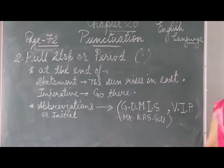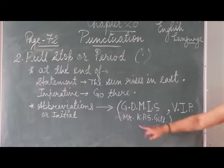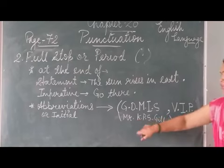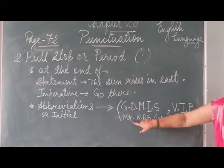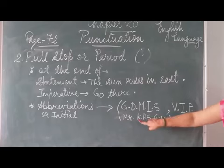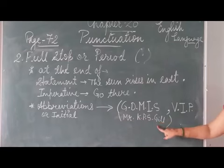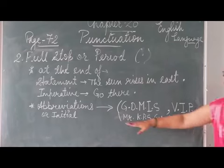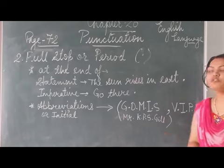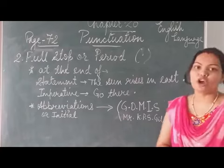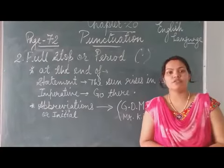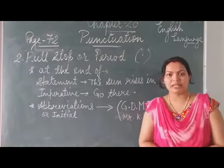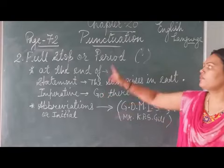In initials also, we use dots — for example, Mr. K.P.S. GIM. You can see after Mr. there is a dot, then K dot, P dot, S dot, GIM. In this also we use full stop, or you can say we use the period sign — period mark.